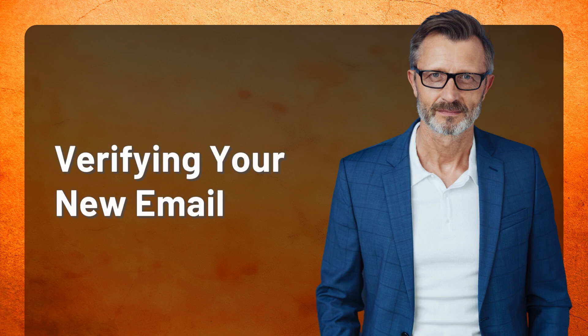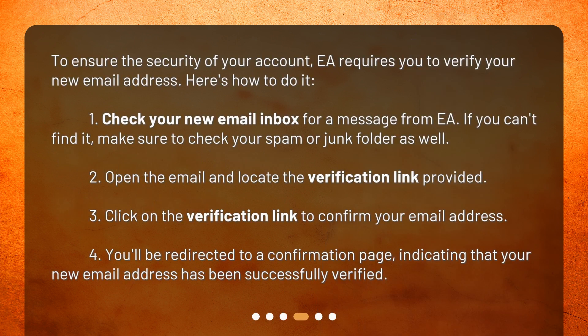Verifying your new email. To ensure the security of your account, EA requires you to verify your new email address. Here's how to do it. 1. Check your new email inbox for a message from EA. If you can't find it, make sure to check your spam or junk folder as well. 2. Open the email and locate the verification link provided. 3. Click on the verification link to confirm your email address. 4. You'll be redirected to a confirmation page, indicating that your new email address has been successfully verified.